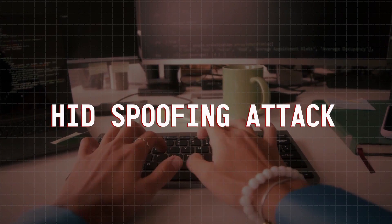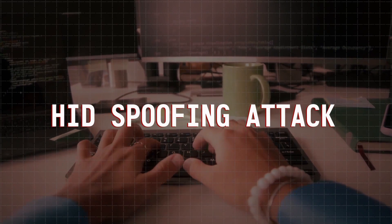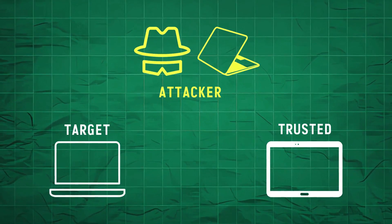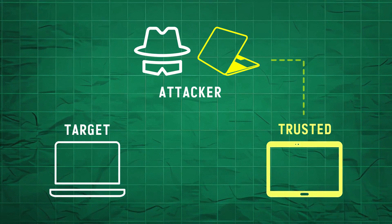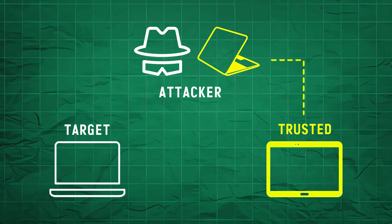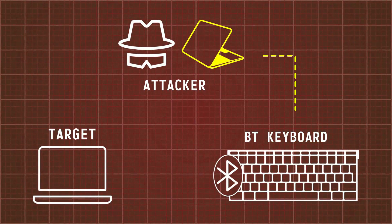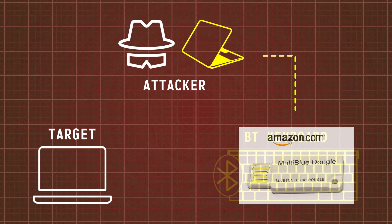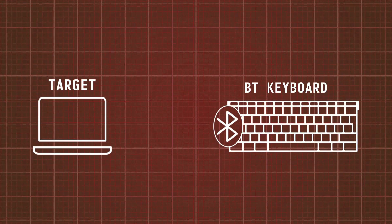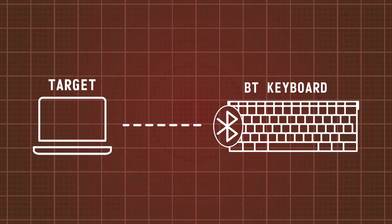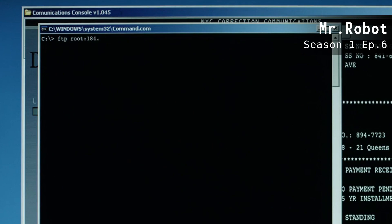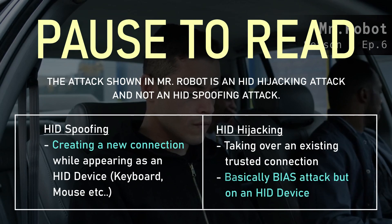Next up we have the Human Interface Device, or HID spoofing attack. While this is also similar to a Bluetooth impersonation attack where an attacker spoofs their device to mimic something it's not, the key difference is that instead of mimicking a trusted device, the attacker uses a device like the multi blue dongle to mimic a Bluetooth keyboard and tricks the target device into thinking it's connecting to a legitimate keyboard. This allows an attacker to remotely control the targeted device and execute malicious commands on it, all while staying under the radar.